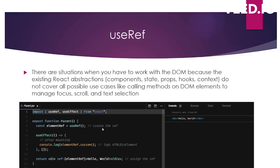Here's a useRef example. First, I create a ref using useRef and get back elementRef. Then I assign it to a div element via the ref attribute. To access it, I use elementRef.current. After mounting — using a useEffect with an empty dependency array — I do console.log(elementRef.current), which logs the complete HTML div element to the console. This demonstrates how useRef is used to access the DOM.